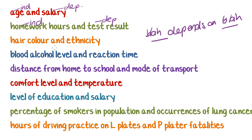Hair colour and ethnicity. 'My hair colour depends on my ethnicity' — that could make sense. 'Ethnicity depends on hair colour' — that does not make sense, because if I change my hair colour it doesn't change my ethnicity. So hair colour depends on ethnicity, making hair colour the dependent variable and ethnicity the independent variable.